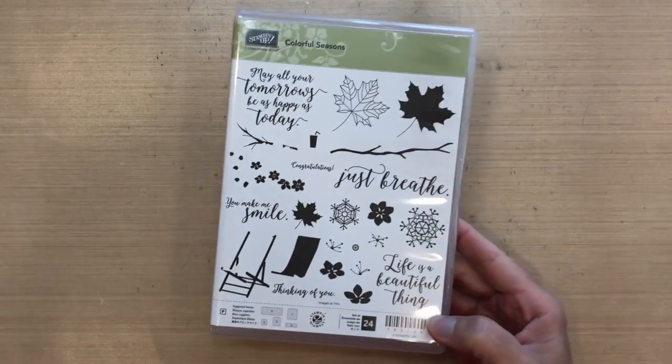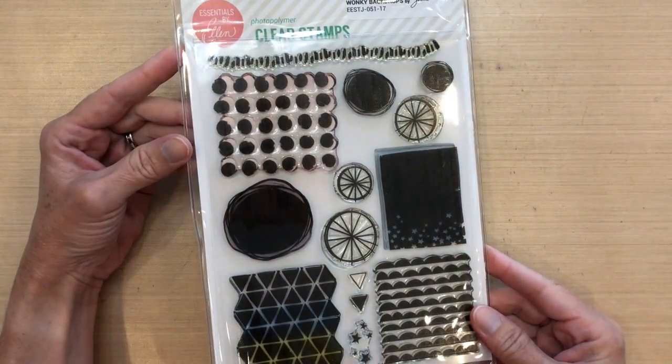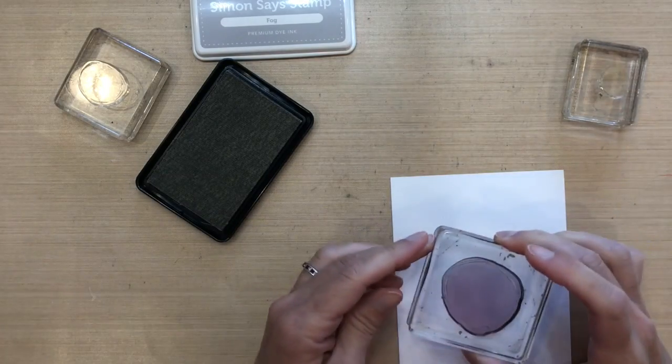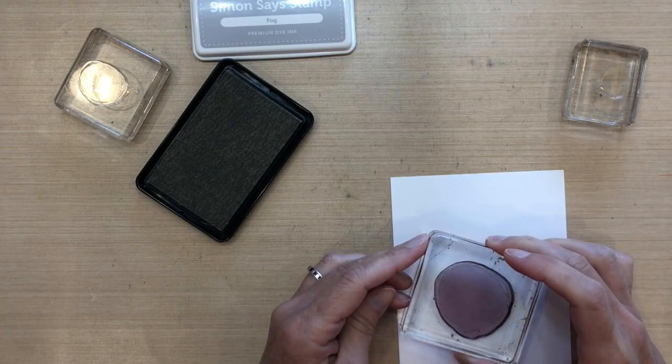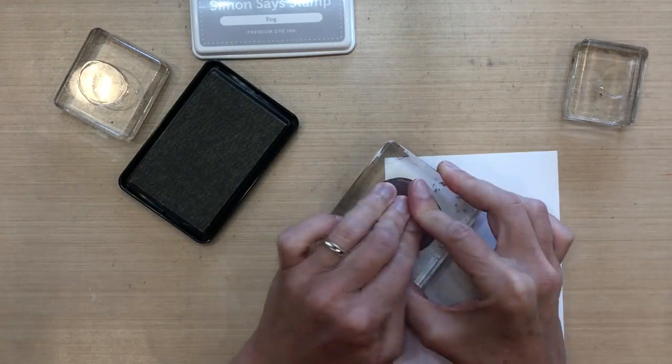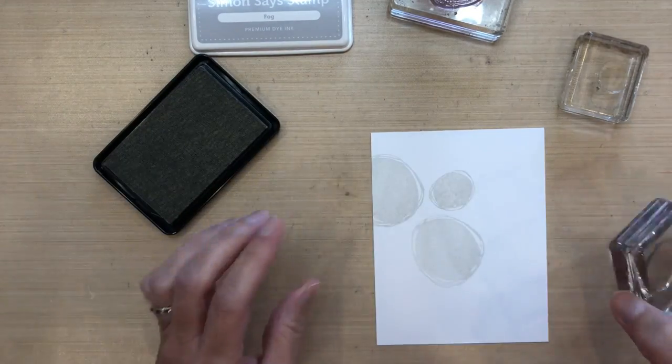So I'm going to use the Cherry Blossom branches today. I'm also using the Ellen Hudson Wonky Backdrops, just these three dots, the solid ones. I'm going to start by stamping these dots onto a piece of A2 size Neenah Solar White cardstock. I'm using Fog Ink by Simon Says Stamp. I think it's just one of the staple inks you should have in your stash. It's a really nice subtle background.